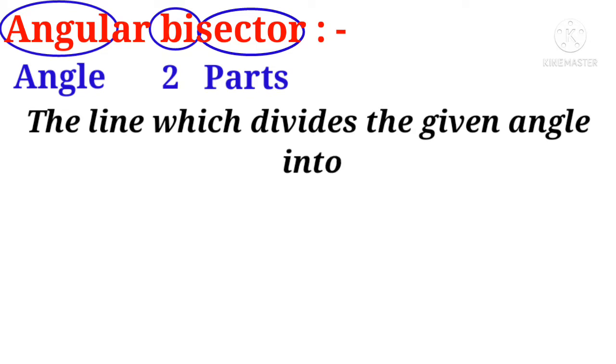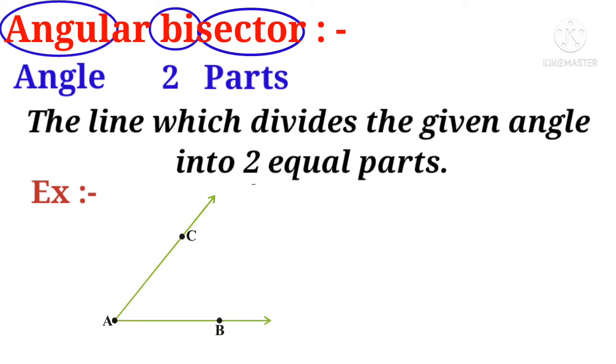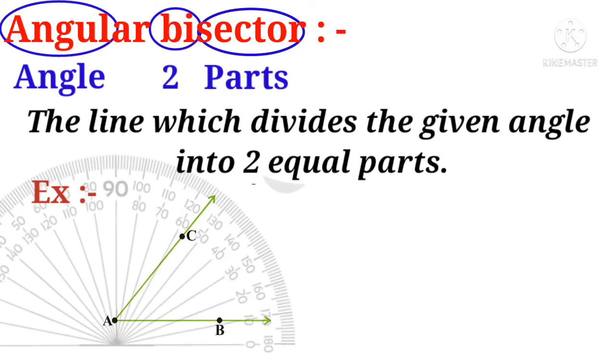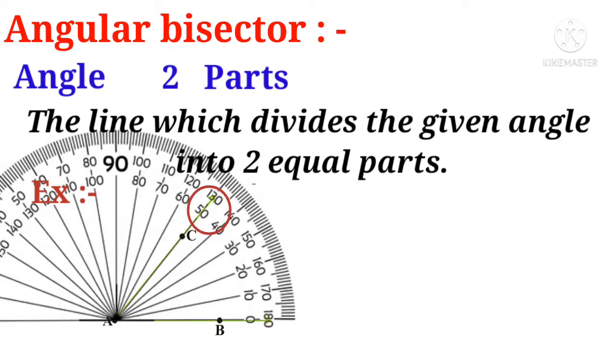Let us take an example. Take an angle. See this angle. Measure the angle with the protractor. It is showing that it is 50 degrees. Let us draw a red line in between the angle so that the angle is divided into two equal parts, that is 25 degrees and 25 degrees. Then the red line is called the angular bisector.